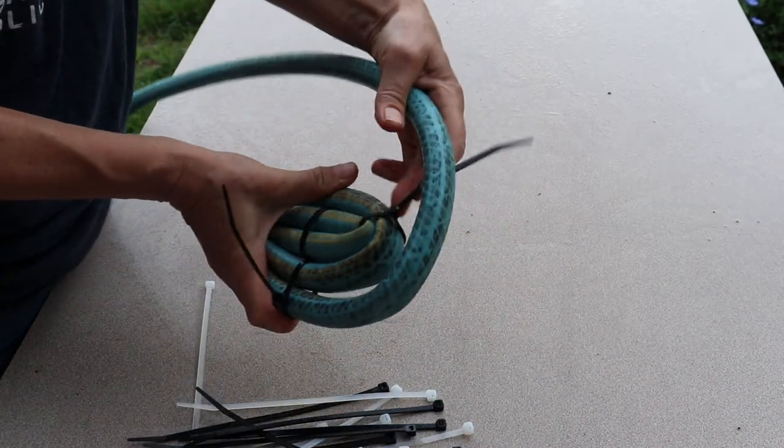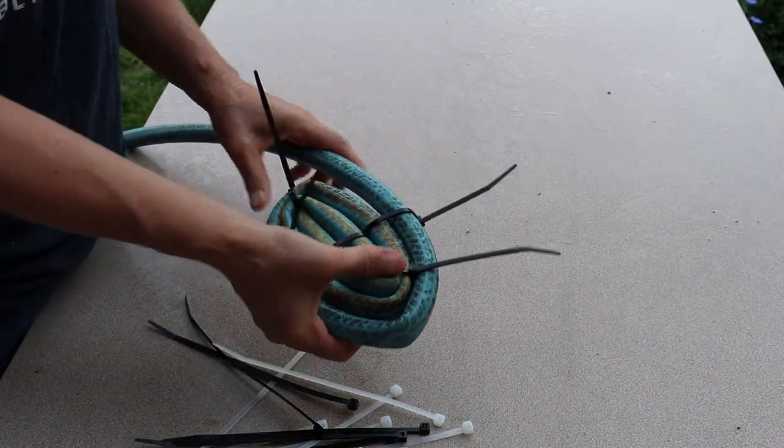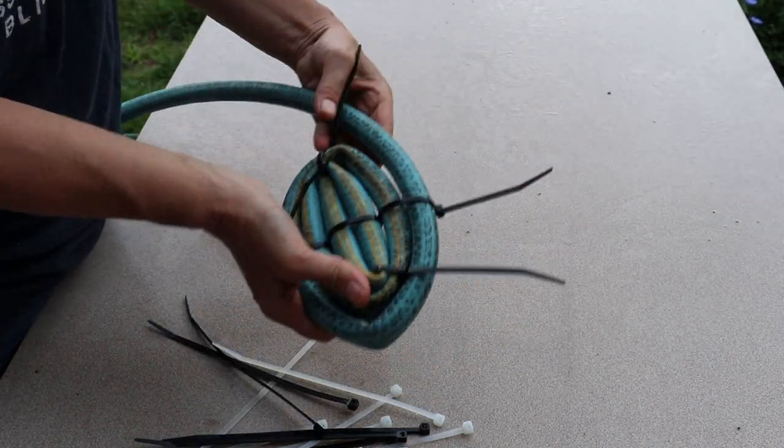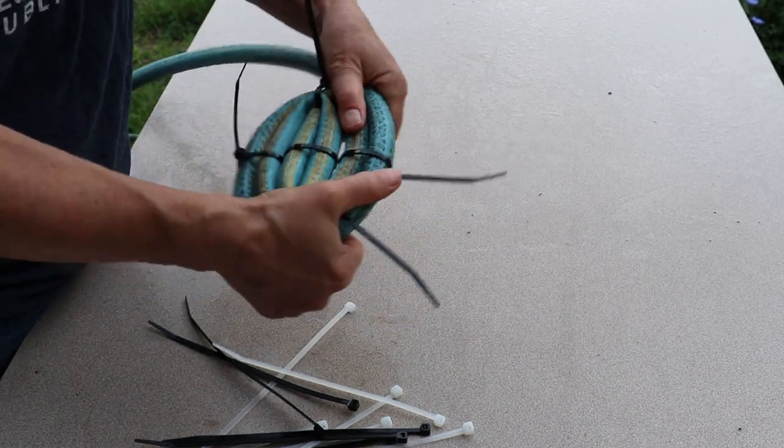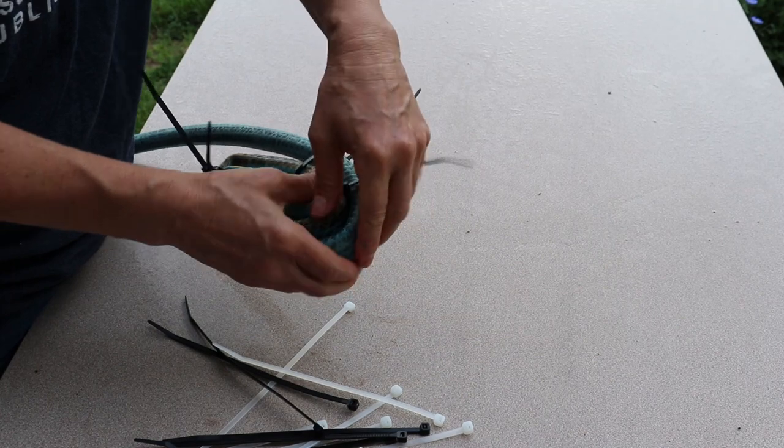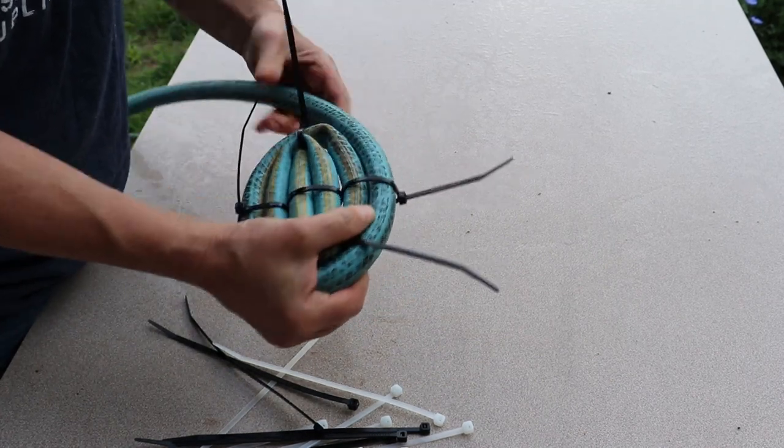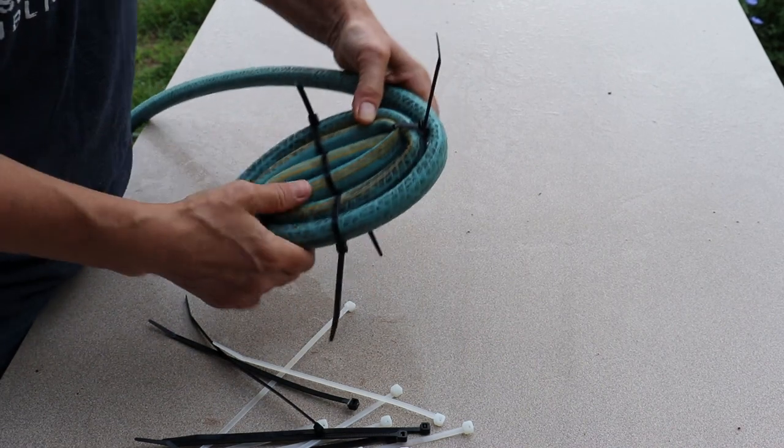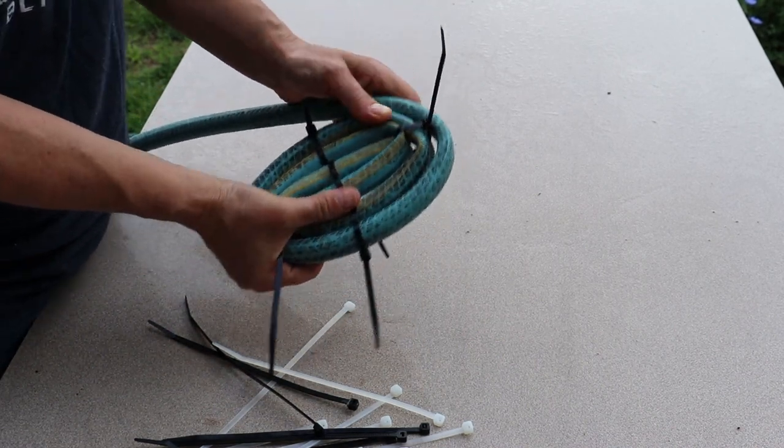Just keep going around. Now some recommendations. The thicker, more heavy-duty garden hose is obviously more difficult to roll. So if you've got an old thinner garden hose, you'll have better luck. And if it happens to be a nice hot day, your hose will be a little bit more pliable.